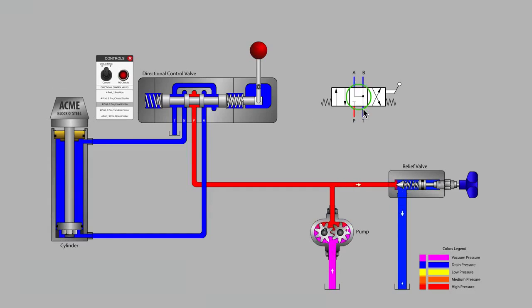the A, B, and T ports are all now connected together. Notice that the lands on the spool have been machined back to allow the B-port and the A-port to connect to tank during the center position.